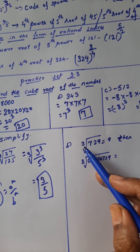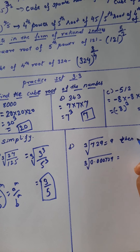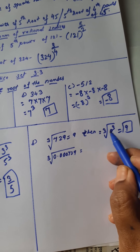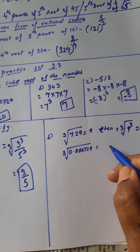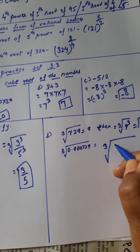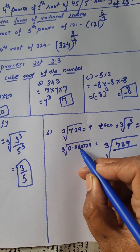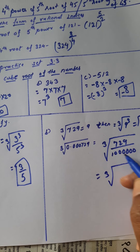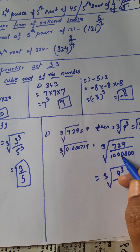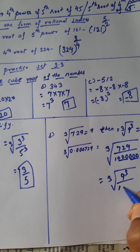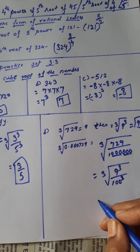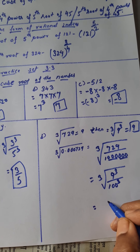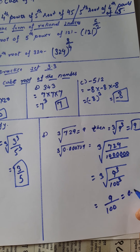Next, it is given as the cube root of 729 upon 1000000. The number 729 is the cube of 9, because 9 power 3 equals 729. For 1000000 — counting the zeros there are six zeros, so it is 1000 squared, or 10 raised to 2, raised to 3 which is 100 cubed. The cube and cube cancel, giving 9 upon 100. Therefore the answer is 0.09.